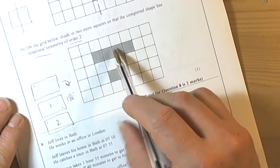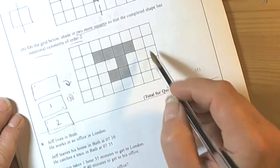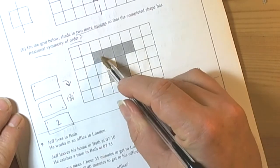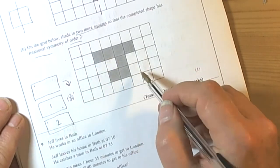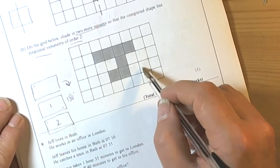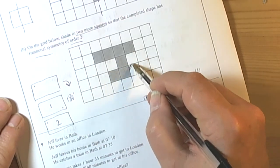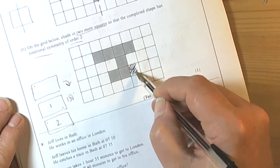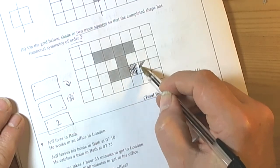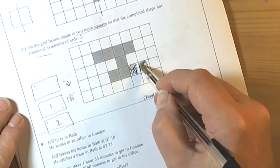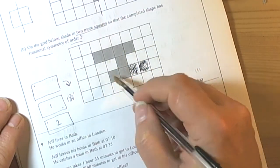So if we look at this shape, we're being asked to add two more squares. If we look, we've got a bit jutting out here, so it would suggest we ought to have a bit jutting out here, otherwise it won't turn upside down and look the same. So we're going to have to shade in that bit there and that bit there, and then that'll give us a shape with order of rotational symmetry 2.